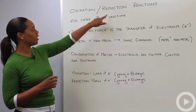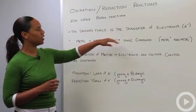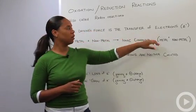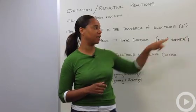So with an oxidation reduction reaction the driving force is the transfer of electrons which throughout this section I'll denote as E minus.